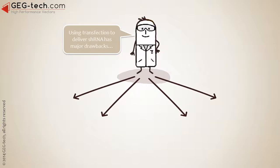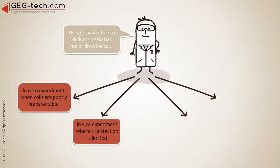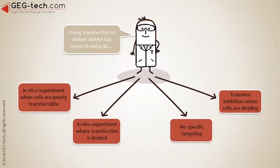Using transfection to deliver shRNA has major drawbacks, like for in vitro experiments when cells are poorly transfectable, or for in vivo experiments where transfection is limited. No specific targeting is possible, and inhibition is transient when cells are dividing.